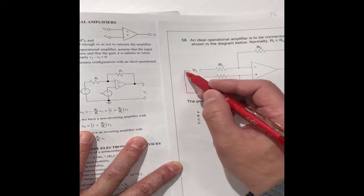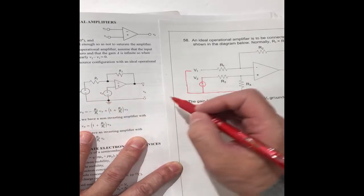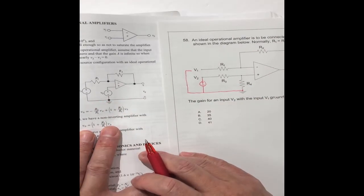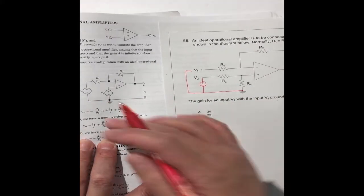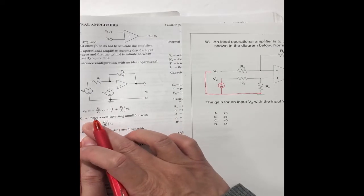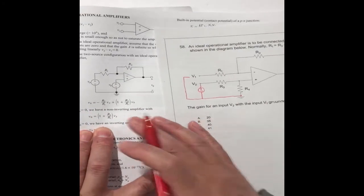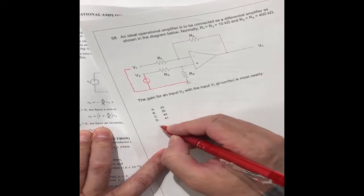And the VA. Because this is grounded, VA is equal to zero. It's equal to zero. So we can get the formula. VA is equal to zero. We can get the solution.